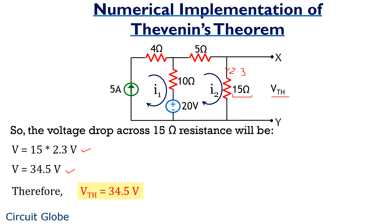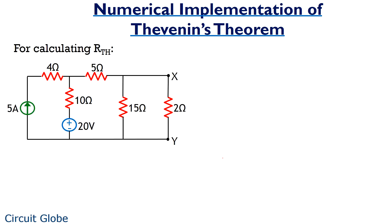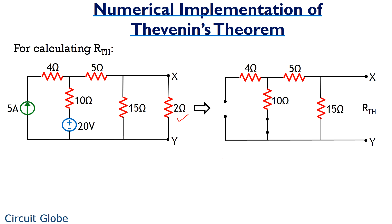Therefore Vth will be 34.5 volts. Now it's time to determine the Thevenin's equivalent resistance. To calculate Thevenin's equivalent resistance, we have to consider the same circuit again, remove the load resistance, and replace all the active sources with their equivalent internal resistances. We know that a current source has an ideal resistance of infinity, while a voltage source has an internal resistance of zero. Therefore we replace the current source by an open circuit and the voltage source by a short circuit condition.